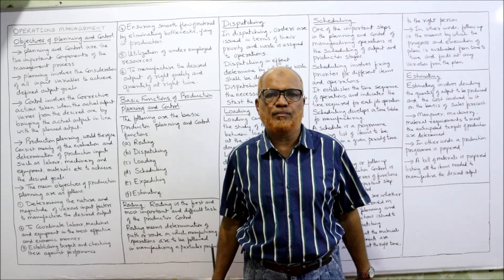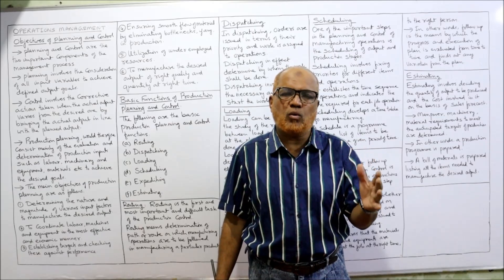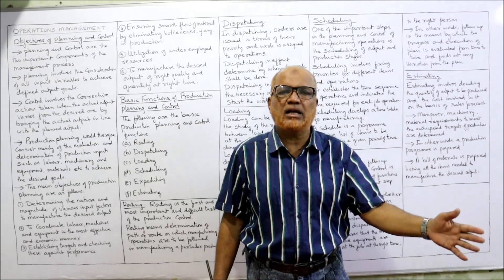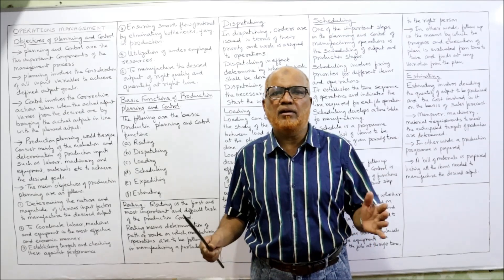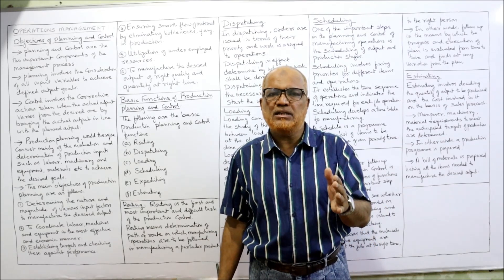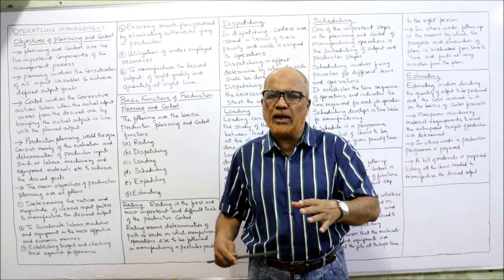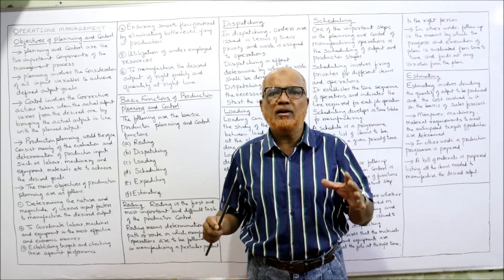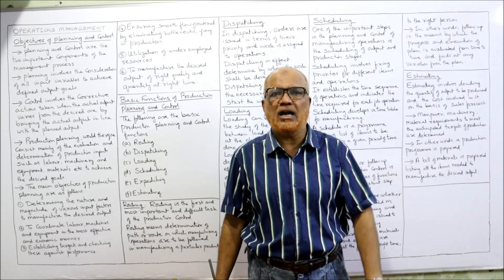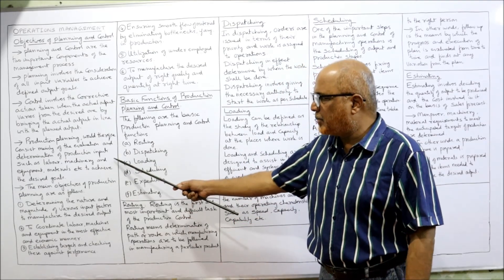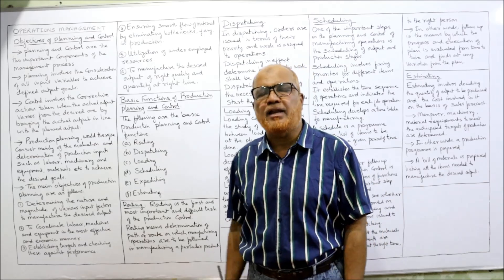From the perspective of production planning, it involves deciding what inputs are required in order to make the output. Every production requires different resources like material, labor, machinery, equipment, or other facilities. Deciding what inputs are required to make the desired output — that is production planning. The main objectives of production planning are as follows.